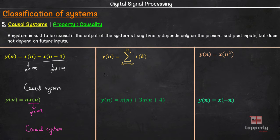If you expand this summation, we get y of n equal to x of minus infinity plus etc. plus x of n minus 2 plus x of n plus x of n.